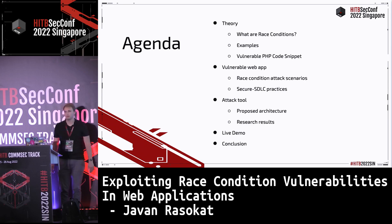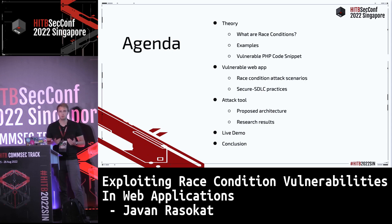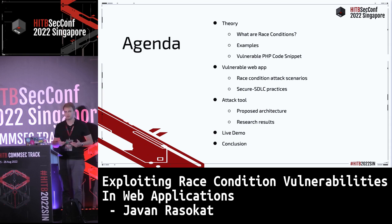The agenda today: we start with a short theory about what race conditions are. Then we have a vulnerable web application implemented to show real race condition vulnerabilities — all inspired by real bug bounty reports and write-ups. We needed that vulnerable web application to demonstrate the attack tool, which is the next step. I've developed a new attack tool to exploit race condition vulnerabilities. Then I'll show this tool in a live demo, and we wrap up with a conclusion.